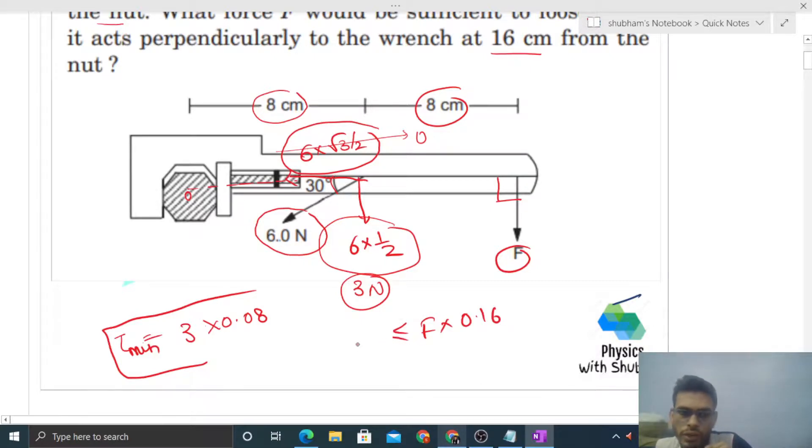It should be greater than or equal to the minimum torque, which is 3 × 0.08. So F should be greater than or equal to 1.5 N.